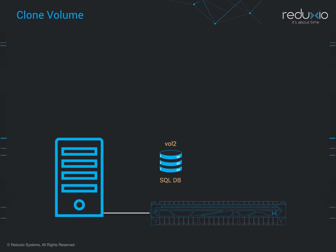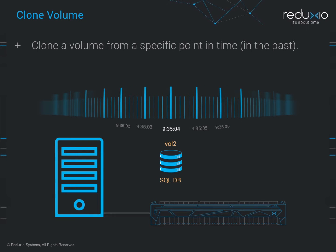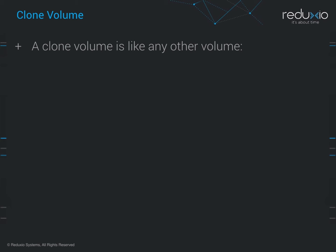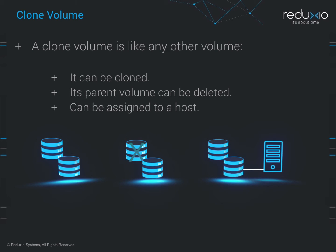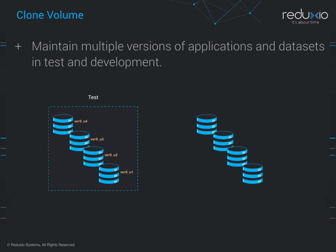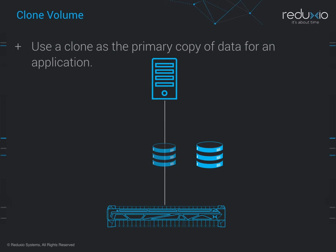The first option is to clone a volume from a specific point in time in the past. The clone operation instantly creates a separate, thin, writable copy of the volume based on the selected second. A clone takes up no space until it is written to. A clone volume is like any other volume in the system — it can be cloned, its parent volume can be deleted, and it can be assigned to a host. In addition to recovering from corrupted data, clones can be used to maintain multiple versions of applications and data sets in test and development. Since clone volumes are completely independent of each other, it is possible to use a clone as the primary copy of data for an application.